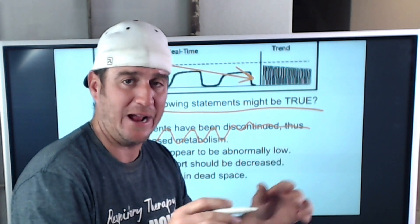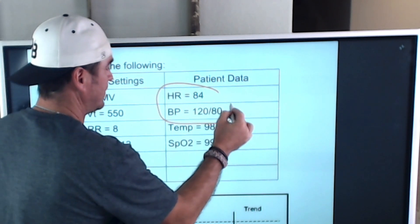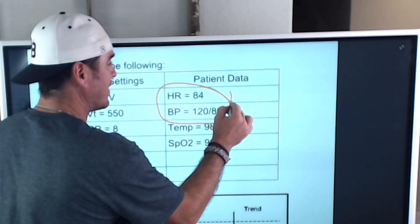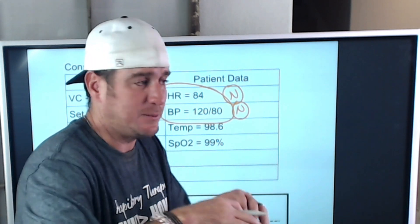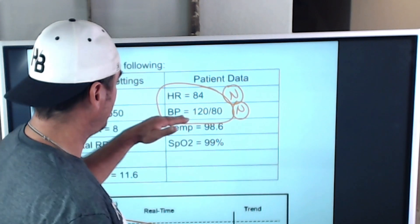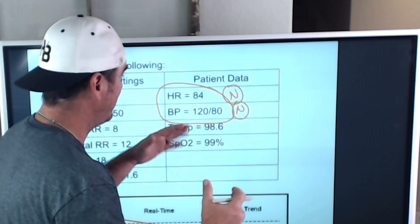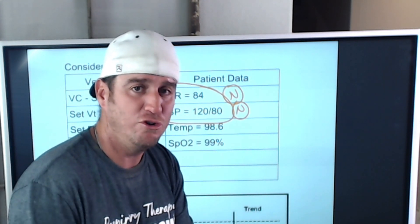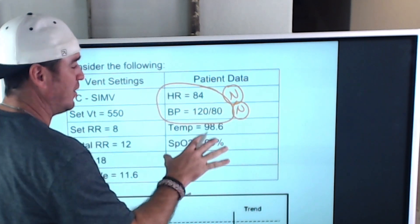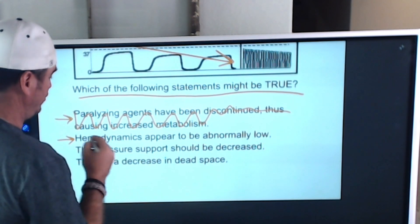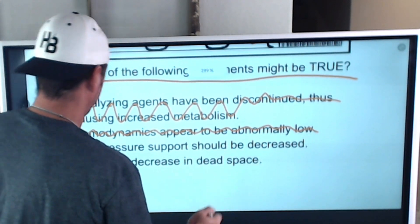The second answer says 'hemodynamics appear to be abnormally low.' Let's go back to the scenario — are our hemodynamics abnormally low? When we talk about hemodynamics we mean blood pressure, heart rate, cardiac output. Nothing here seems out of whack or abnormally low. We have a normal blood pressure and normal heart rate. You have to use the data that is given and not read into the scenario. Our hemodynamic status is stable, so answer two is false.